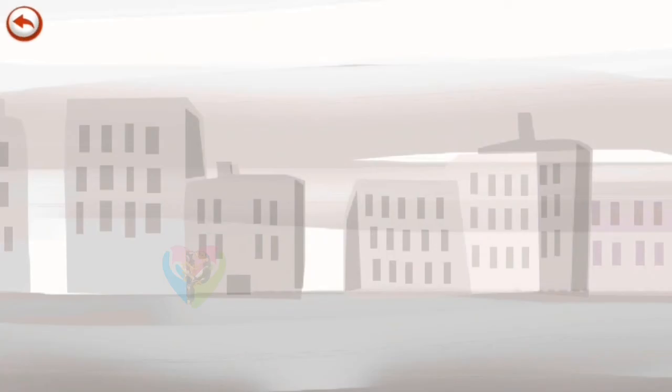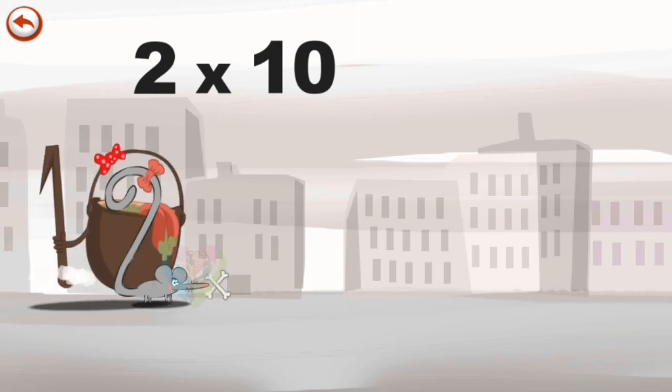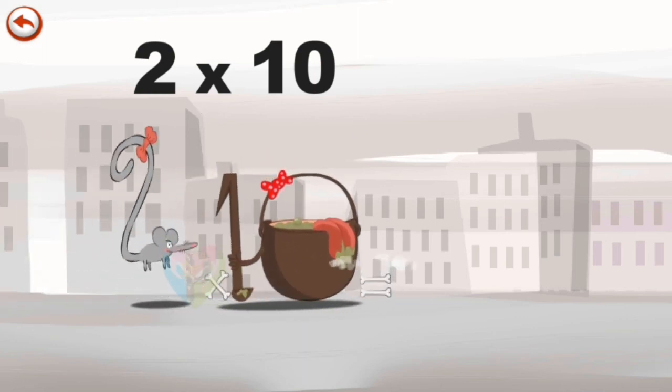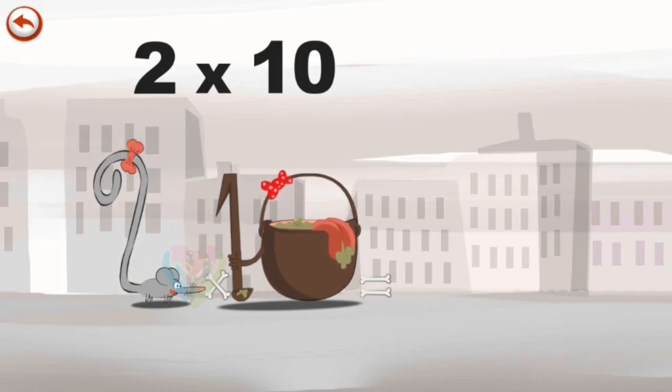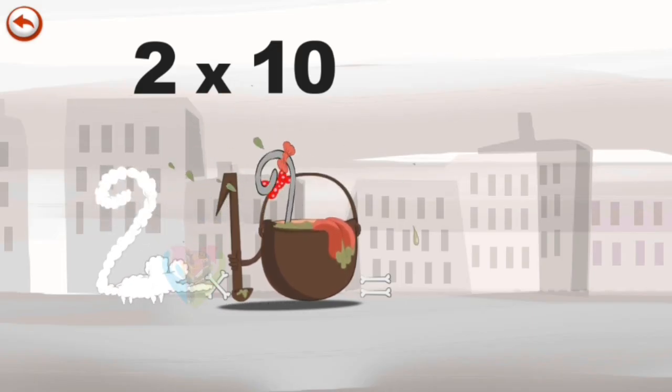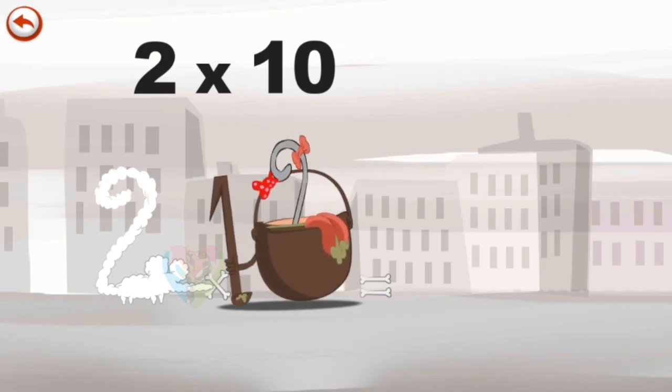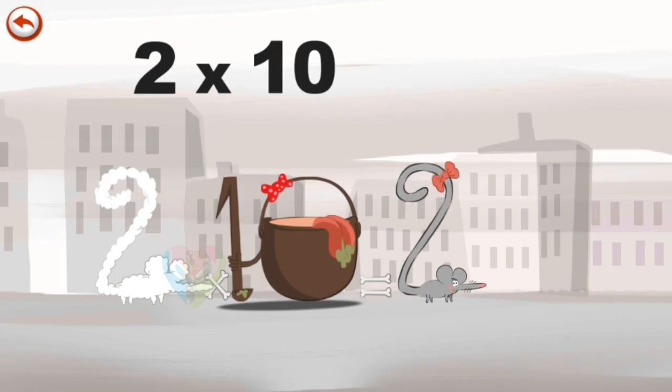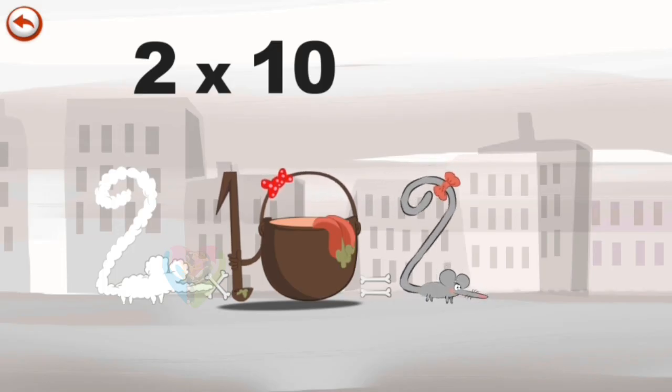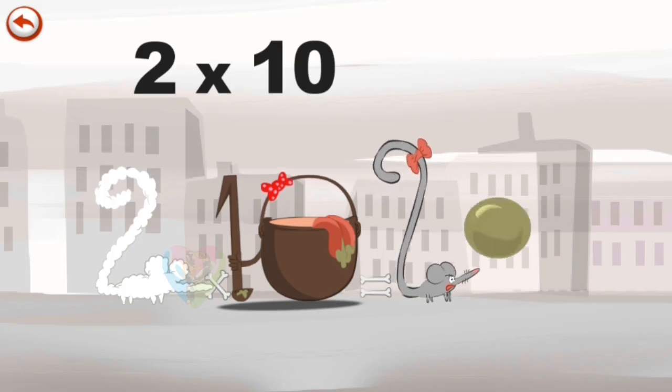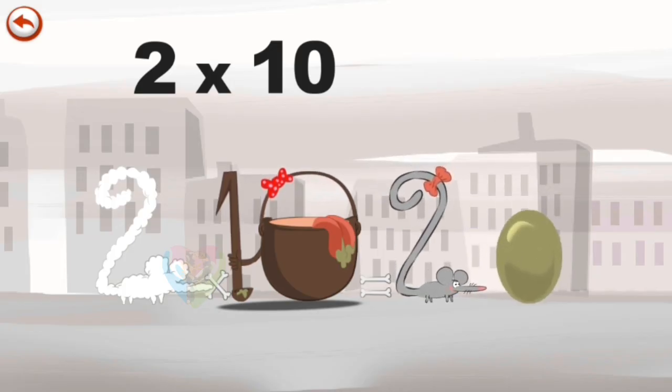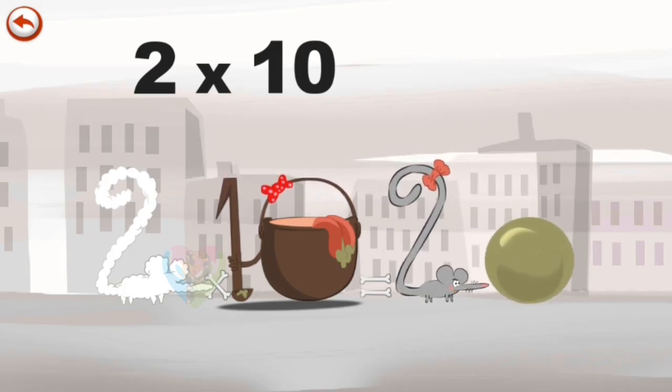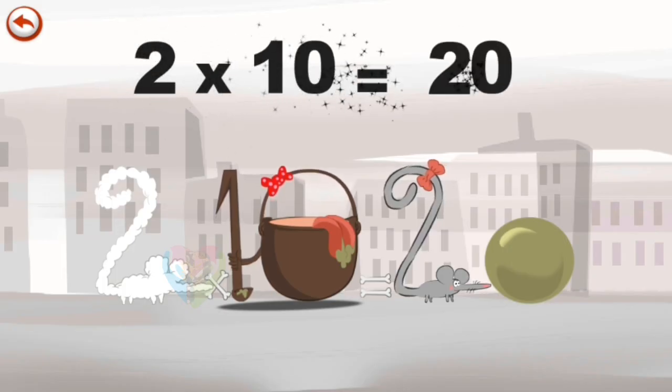What's the story of 2 times 10? When 2 Squeaks meets the potion Magi 10, it makes her very, very hungry. She dives head-first into the cauldron, and comes out feeling very full. She gives an enormous magic burp, and blows a bubble in the shape of a zero. 2 times 10 is 20.